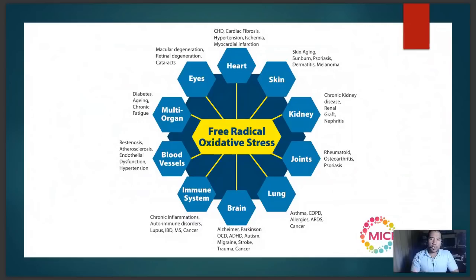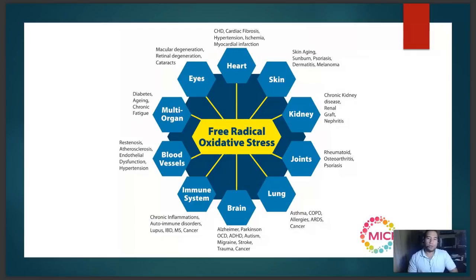The reason mitochondrial dysfunction affects virtually everything is because virtually every cell in your body has mitochondria — except red blood cells, which don't have mitochondria because they have one important function: to carry oxygen, and mitochondria suck up oxygen. In the eye, this dysfunction is responsible for macular degeneration, retinal degeneration, and cataract formation. In the heart, it's responsible for cardiovascular disease, hypertension, and myocardial infarctions. It also drives skin aging, chronic kidney disease, rheumatoid arthritis, asthma, and COPD.